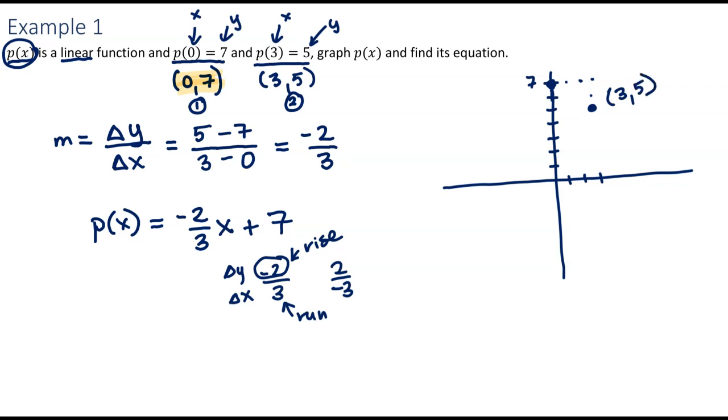And you can continue this pattern. You can go over 1, 2, 3, over 1, 2, 3, down 2. And that's going to put you at 6, 3. And you can keep going as long as you want.